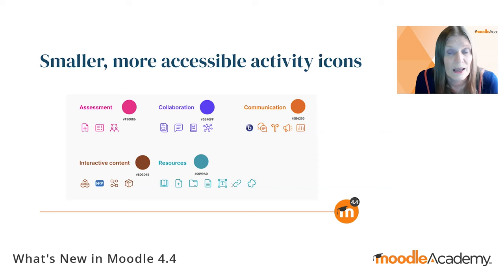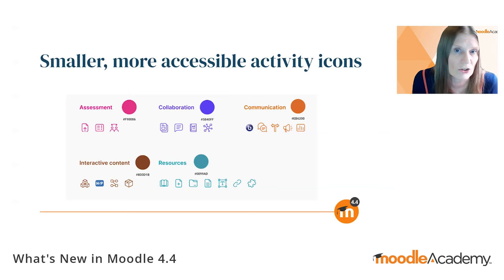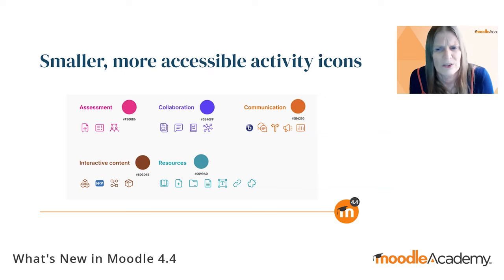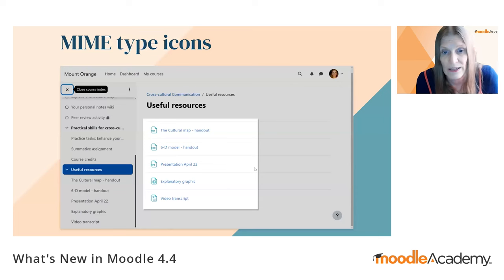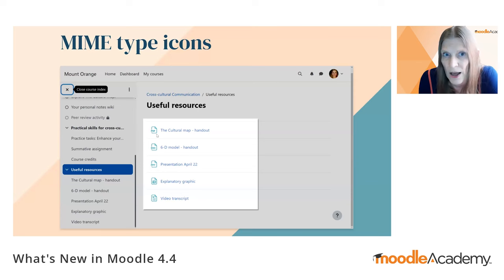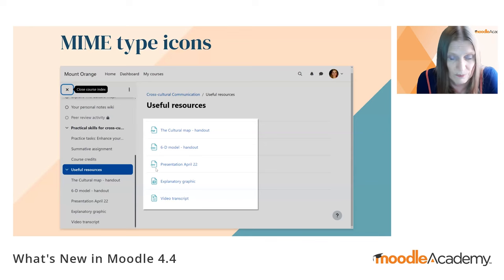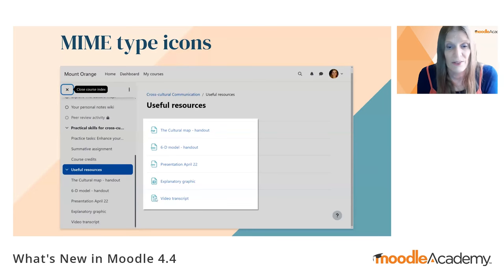It's not only activity icons that have been improved. In earlier versions, when people uploaded files of different types, it was hard to see what the file was. Now, in what is also one of those new section pages, you can clearly see that a handout is a PDF from its MIME type icon, the next is a Word doc, then a PowerPoint presentation, an image file, and a text file indicated by the T in the icon.